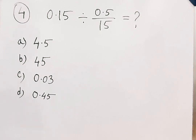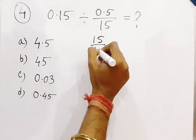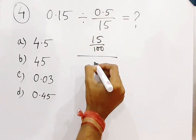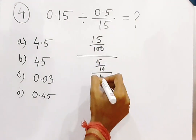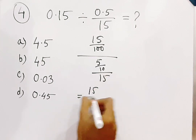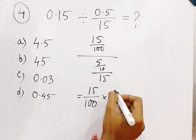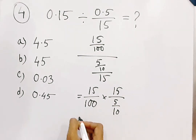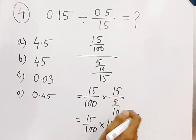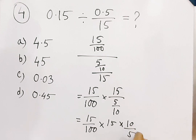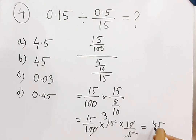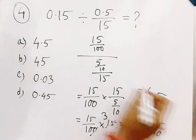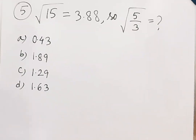Now the question is 0.15 divided by 0.5 × 15 equal to question mark. So 0.15 means 15 by 100, 0.5 means 5 by 10, and 15 stays as 15. It becomes 15/100 divided by 5/10 × 15, which is 15/100 × 10/5 × 1/15. Cancelling zeros, 5 into 15 gives 3, so the result is 45 by 10 = 4.5. So A is the answer.